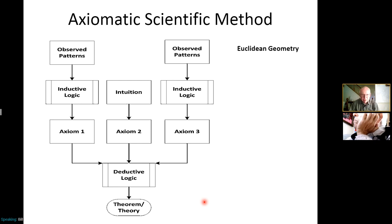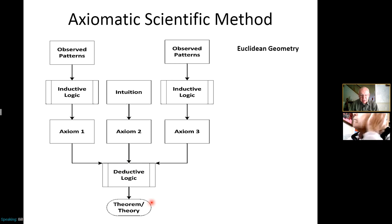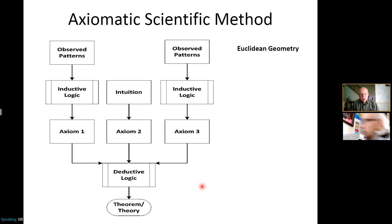They also used intuition. Using these two techniques, they were able to come up with a series of axioms. Axioms are not theories — they're more like assumptions. Then using deductive logic, they were able to derive theorems or theories. The theorems of geometry were developed that way. If any of the axioms were disproven by some method, that would falsify the theory and they'd have to make a modification.